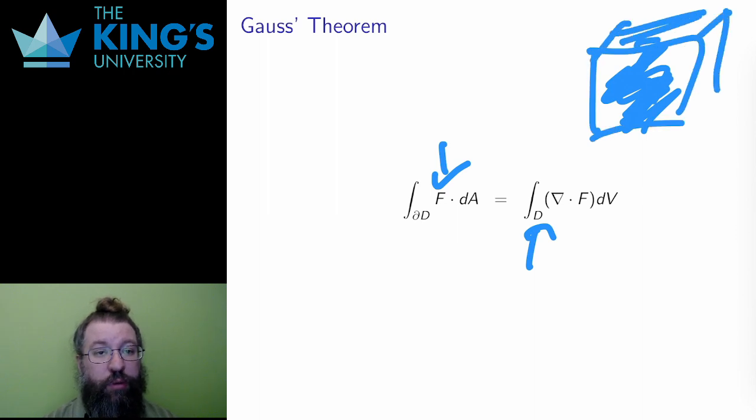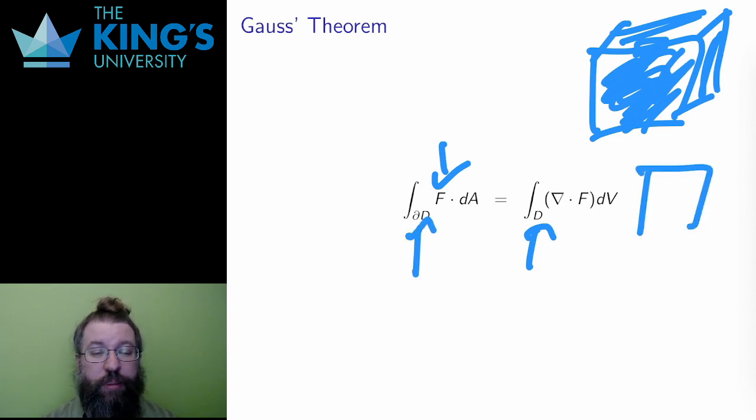The boundary of a three-dimensional region is a surface. The hollow sphere is the boundary of a solid sphere. The hollow cube has the boundary of a solid cube. The orientation by convention is always outward. The normal of the surface has to point out from the solid region.